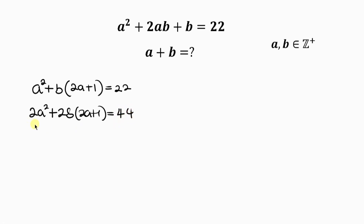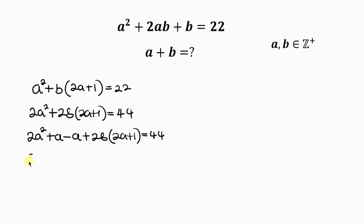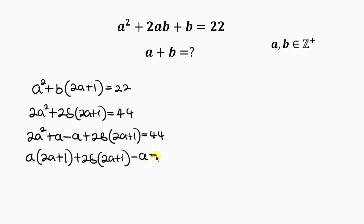This can be further simplified into 2a squared. I'm going to be adding a and also removing a, so it is still the same thing. Plus 2b times (2a plus 1) equal to 44. Notice a is common so I can factor out a, giving a times (2a plus 1), plus 2b times (2a plus 1), then minus a, equal to 44.